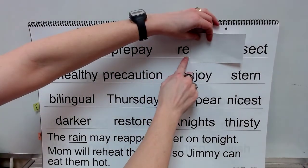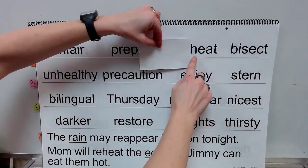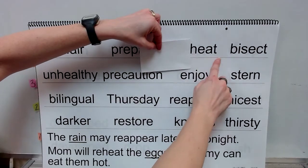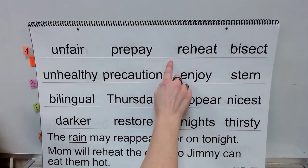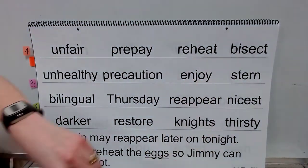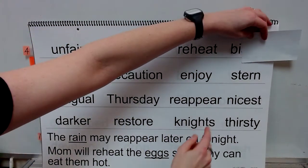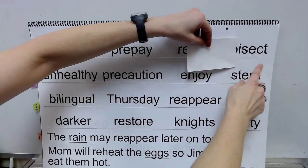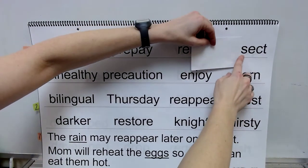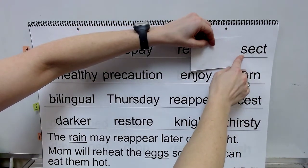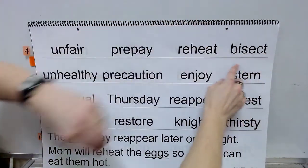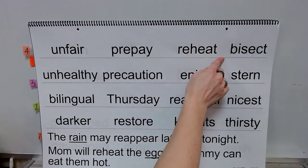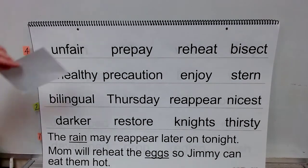Prefix: re. Base word: heat. Word: reheat. Prefix: bi. This is a word root: sect. What word? Bisect.